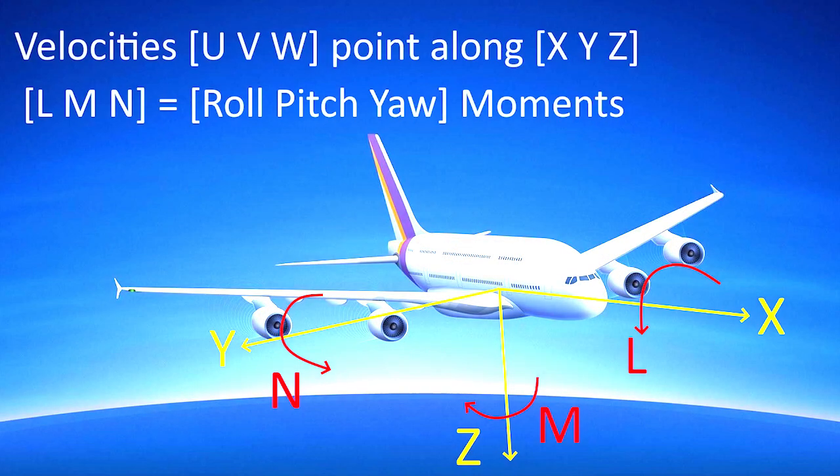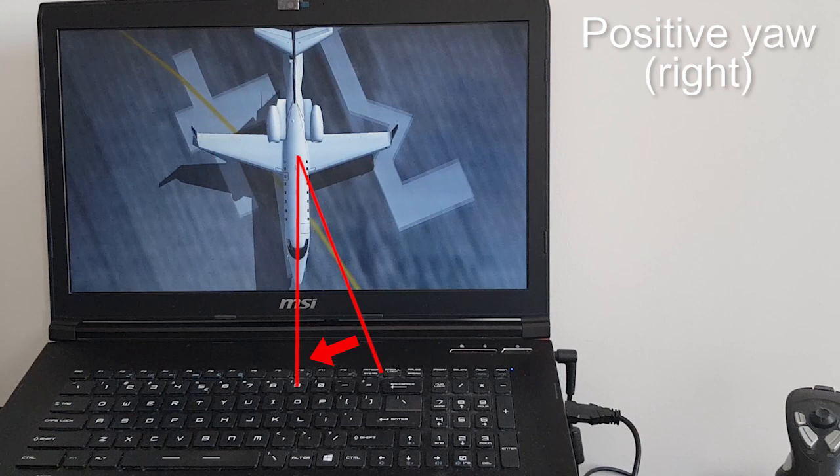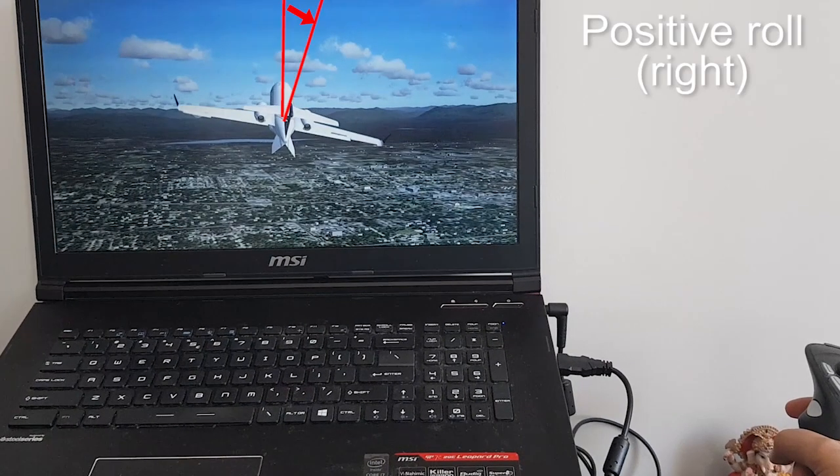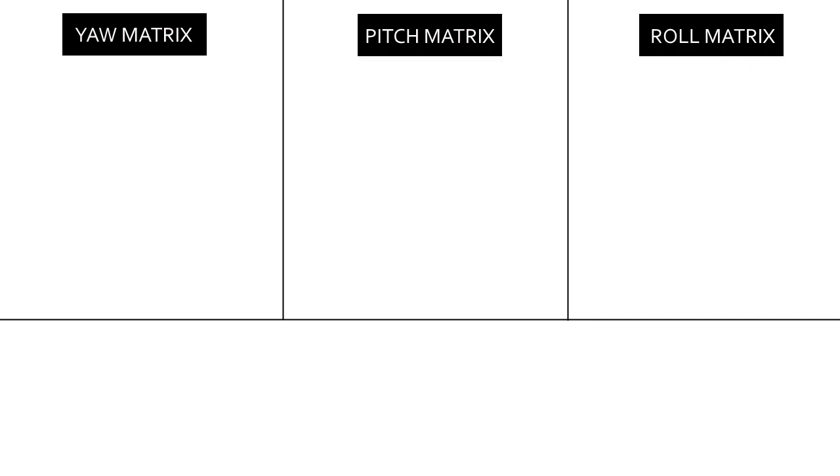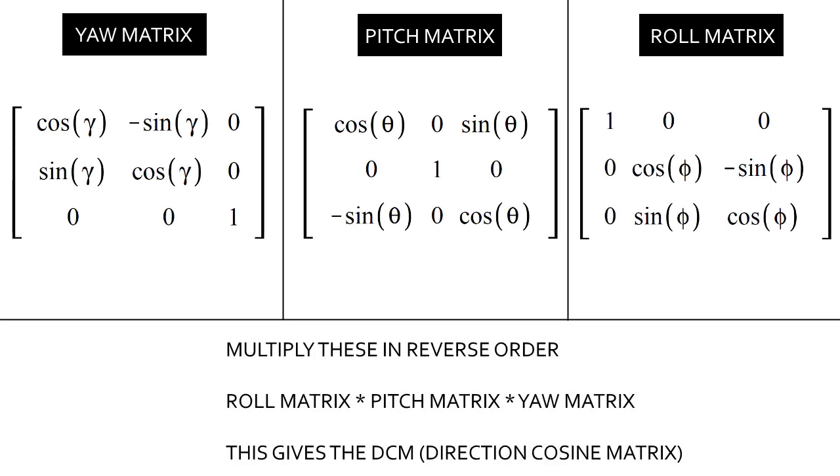These are roll, pitch, and yaw moments. As you can see, their velocities point along X, Y, and Z. That's positive yaw, that's positive pitch, that's positive roll. These can be summarized into matrices, each for yaw, pitch, and roll. We also have the directional cosine matrix. You multiply all of them in backwards order, so you get the 3-2-1 sequence.